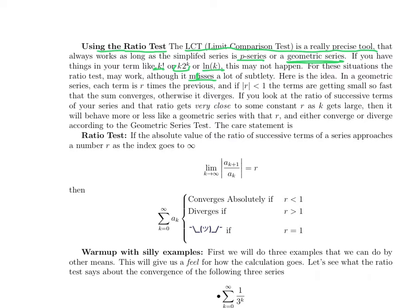Here's the idea. In a geometric series, each term of the series is r times the previous. If the absolute value of r is less than 1, that means the terms are getting small so fast that they add up to a finite number. If it's greater than or equal to 1, they're getting bigger and it fails to add up to a finite number. If you take any series and look at the ratio of successive terms, if it's always the same constant, then it is a geometric series. If the ratio just approaches one half as you go further out in the terms, and if the ratio of successive terms is getting close to some number r as k gets large, then it's going to behave like a geometric series with that r.